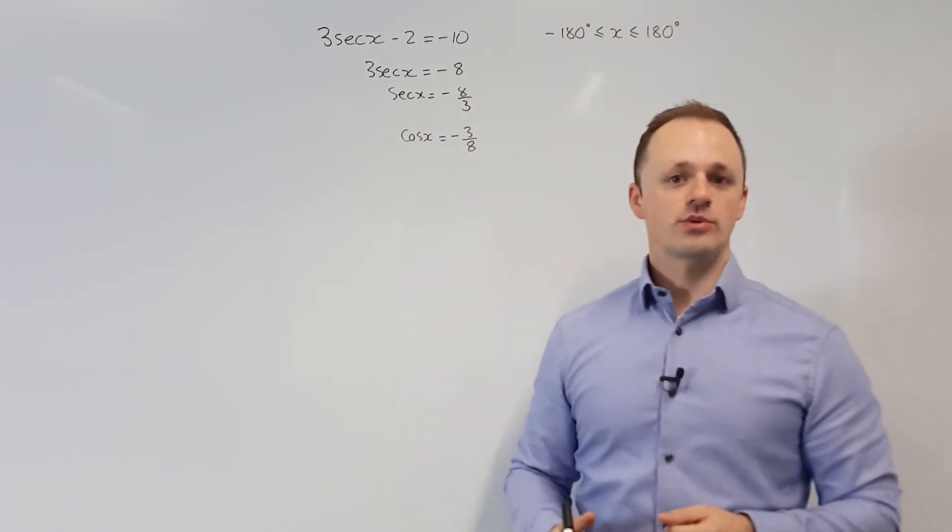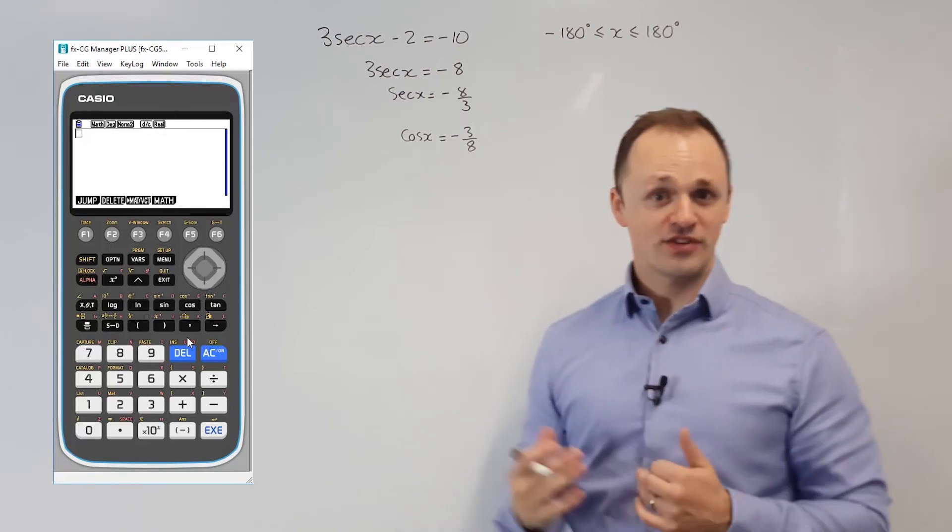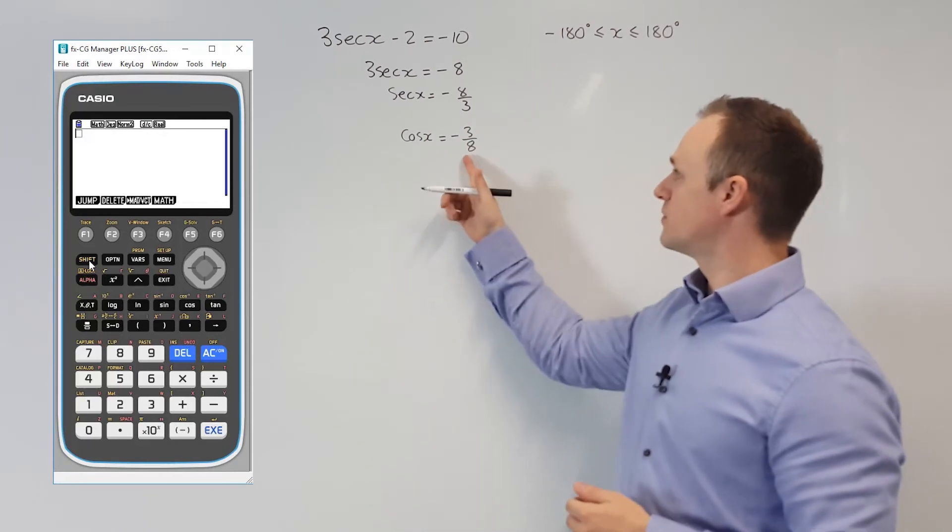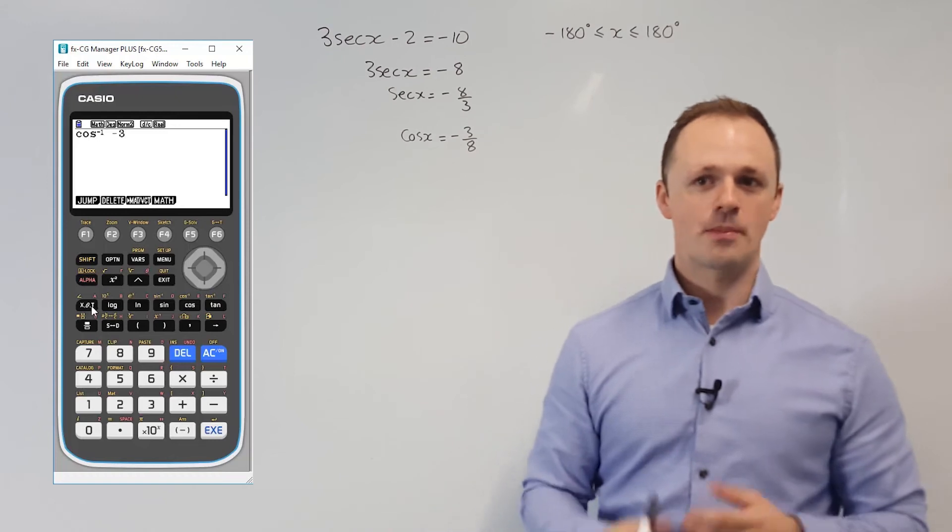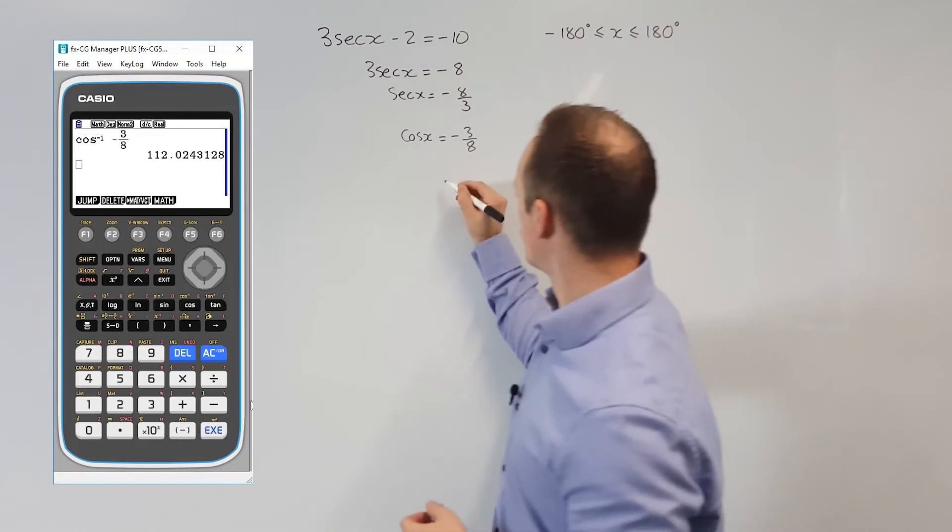From here, we can put it into our calculator. Remember, this one is in degrees, specifically to the nearest degree. If we do inverse cos of negative 3 eighths, our principal solution is 112 degrees.